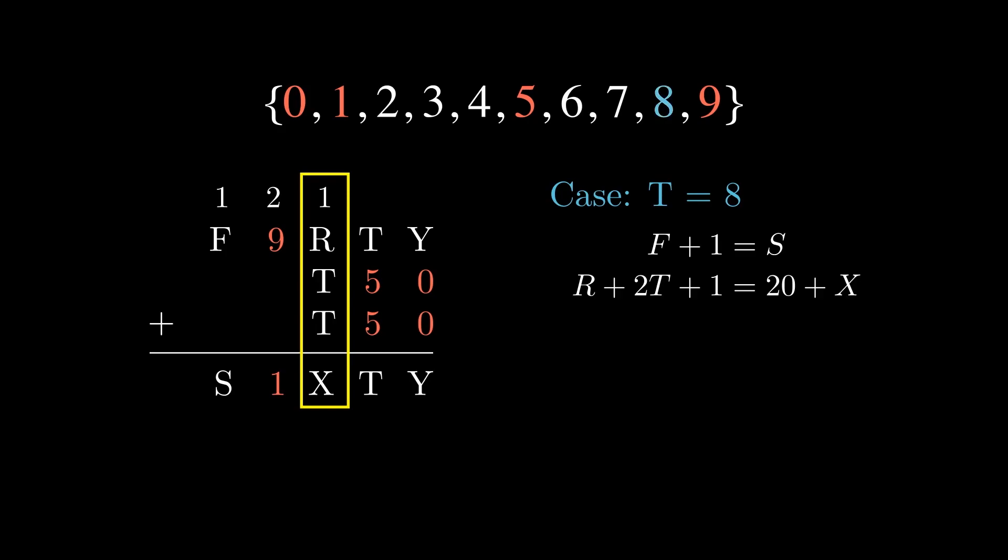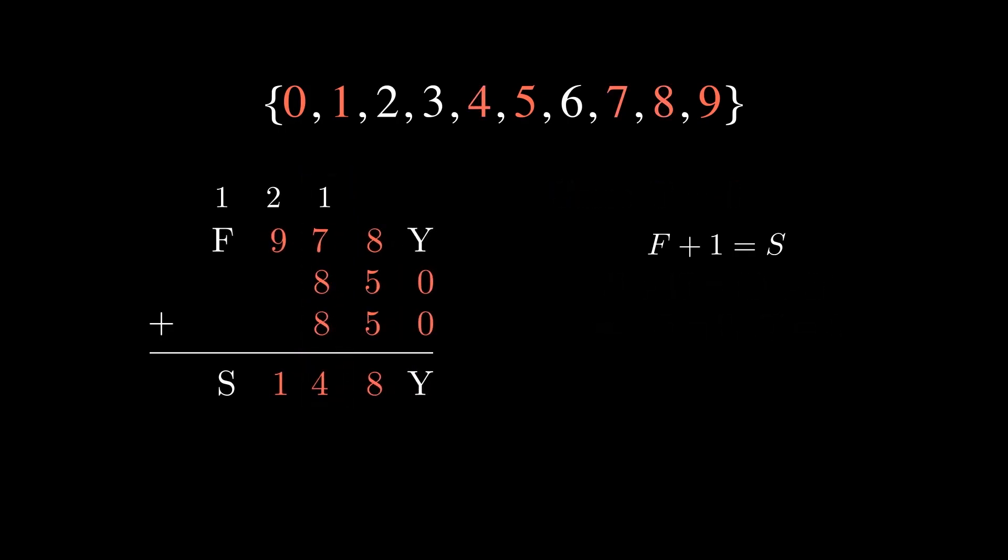As a sanity check, let's see if this problem still occurs when T is equal to 8. Setting T equal to 8 simplifies our equation to R plus 17 is equal to 20 plus X. Aha! If we set R equal to 7 and X equal to 4, we don't have any adjacency problems. We still have 2 and 3 as an adjacent pair of digits. We can set F and S to 2 and 3, which leaves just 6 for Y. And we're done.